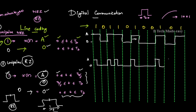Then return to zero. Again 0, amplitude 0. Again 1 — amplitude A for only half bit duration. This is unipolar return to zero. In this scheme, 1 is represented by amplitude A for only half the bit duration, and the end of the bit duration is a transition back to zero. Return to zero means at half bit duration there is a transition.